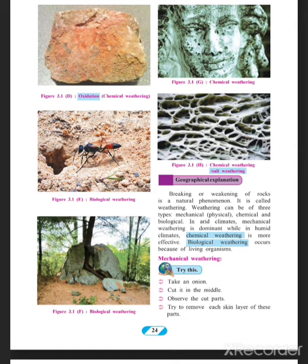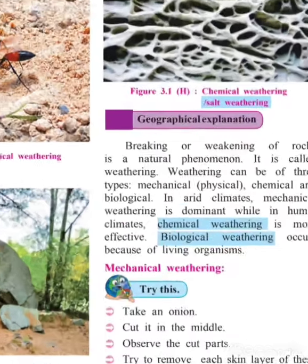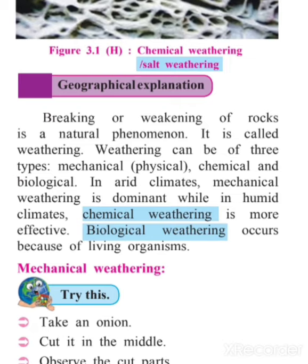Breaking or weakening of rocks is natural — weathering takes place. A big rock, with the help of winds, collides with other rocks and breaks into different pieces, which again break into very small pieces, and thus soil is formed. This is the weathering process, which happens naturally. It is a continuous process, and that's why a rock takes more than a thousand years to form soil. That's why we should protect soil from erosion. Breaking or weakening of rocks is called weathering, and it can be of three types: mechanical weathering, chemical weathering, and biological weathering.